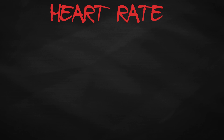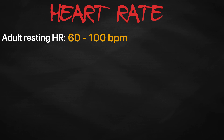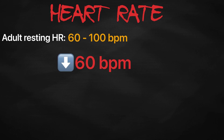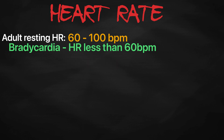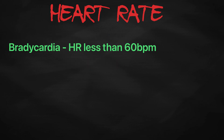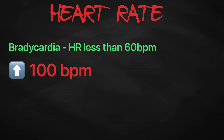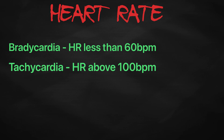Normally for an adult, resting heart rate will be in the range of 60 to 100 beats per minute. If less than 60 beats per minute, we call it bradycardia — the condition in which resting heart rate drops below 60 beats per minute. And if it is higher than 100 beats per minute, we call it tachycardia — a condition in which the resting heart rate is above 100 beats per minute.